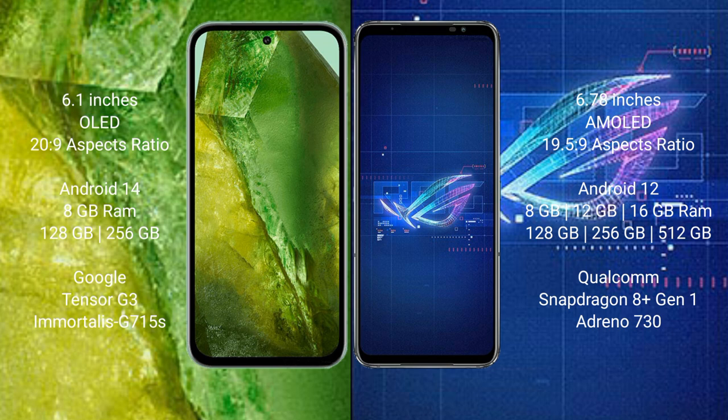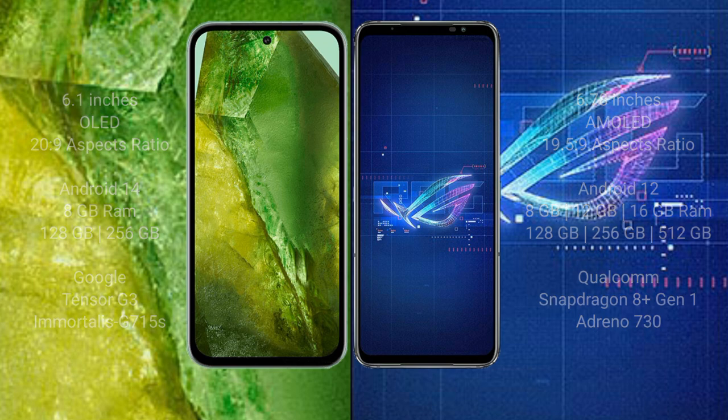Google Pixel 8a comes with 8GB RAM and 128GB or 256GB internal storage, Google Tensor G3 processor and Adreno GPU. Asus ROG Phone 6 comes with 8GB, 12GB, or 16GB RAM and 128GB, 256GB, or 512GB internal storage, Qualcomm Snapdragon 8 Plus Gen 1 processor and Adreno 730 GPU.